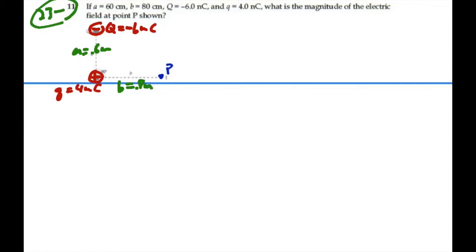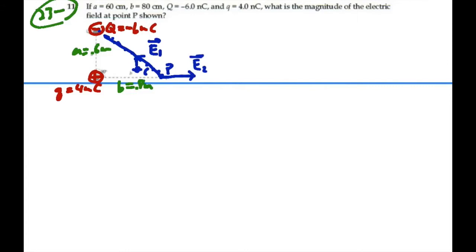Now, big Q is going to have electric fields coming into it radially, and from point P it will be along this line of action here. So there will be a field — let's call it E1 — that will be going up towards big Q at some angle theta in this triangle. Then we have this positive charge, little Q, and there will be a field emanating away from it radially, so at point P that field will be going to the right, and we'll call it E2.